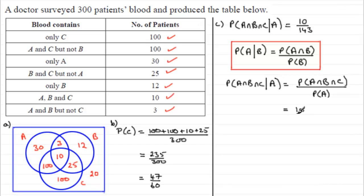And that's all divided by the probability of A. But the blood has substance A in. That's all of this circle. 143. 143 out of 300.